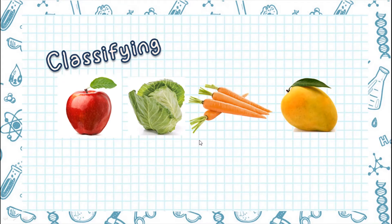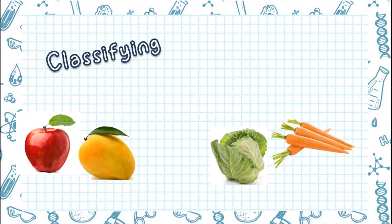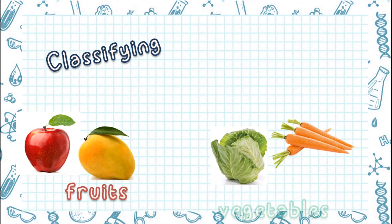Now, let's go to classifying. Classifying means to put alike things together. You can classify things based on a similar characteristic. Look at the four pictures. How are you going to classify these four foods? You can classify them into fruits and into vegetables.